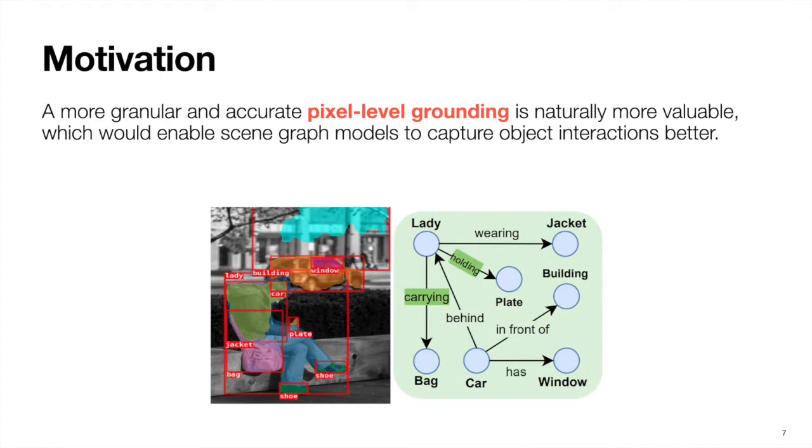The ability to ground objects to pixel-level segmentation masks would therefore be more valuable. As seen from this example, such a granular grounding allows the model to accurately predict relations such as lady holding plate and lady carrying bag, which are either missing or misclassified in the previous example.